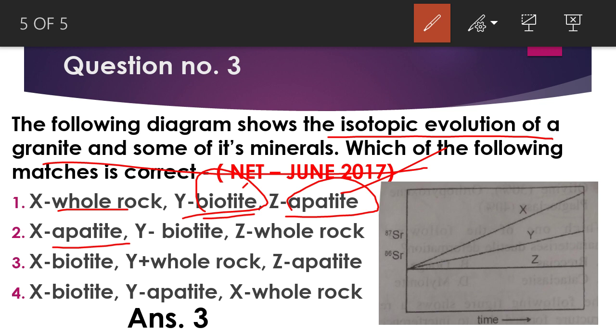So apatite will give you the same ratio of 87Sr to 86Sr because it has no rubidium. So Z will go with apatite, like in the third option and first option. While X is your biotite and Y will be your whole rock.